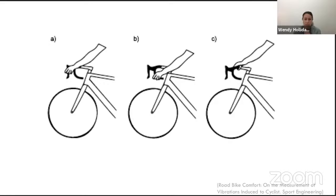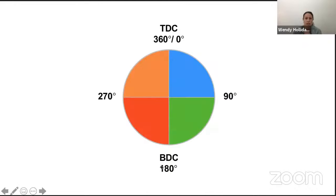We talk about the pedal revolution — your foot action going around the pedal. You have top dead center at zero or 360 degrees, the first quadrant to 90 degrees, bottom dead center at 180 degrees, then 270 and back to the top. It's also known as the push and pull phase. As one leg pushes down, the other leg, which is fixed onto the pedal, can pull up and help generate a stronger force to turn the pedals over quickly.